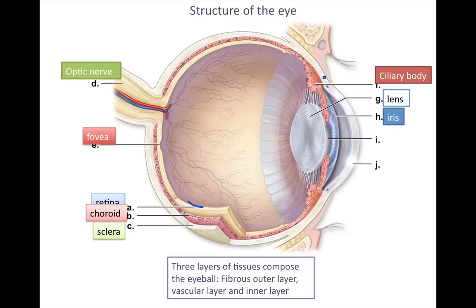We have the iris, which we're all very familiar with — the colored portion of the eye. The pupil is the center hole in the middle of the iris. And lastly, we have the cornea, which is the transparent portion in the front of the eyeball in a smaller circle. It's kind of an extension of the sclera, but it doesn't have the white fibrous nature of the sclera.